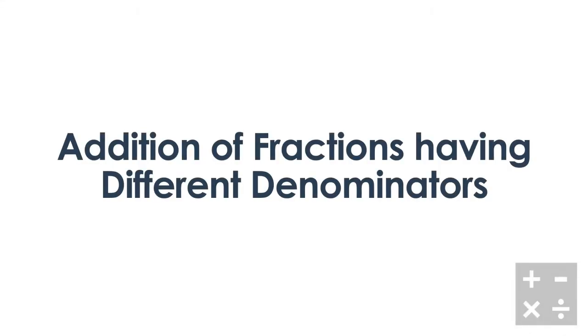In this video we're going to take a look at the addition of fractions having different denominators. This means that the bottoms of both fractions are different from one another. We're going to start off by taking a look at an example. Our instructions, just like the last video, is add and write your answer in lowest terms. Here's our question: 1 over 3 plus 1 over 6.